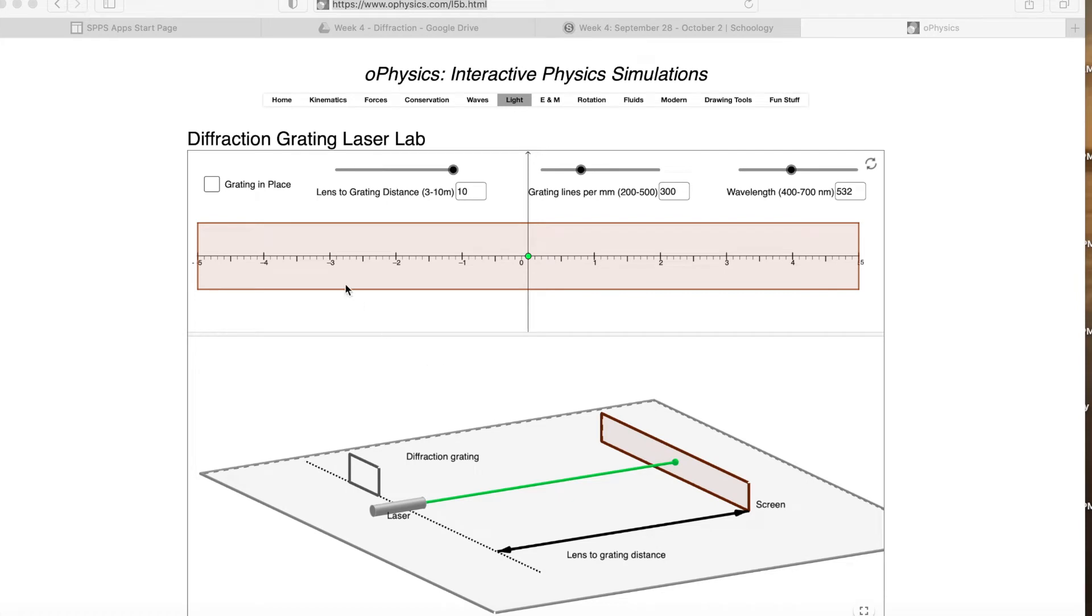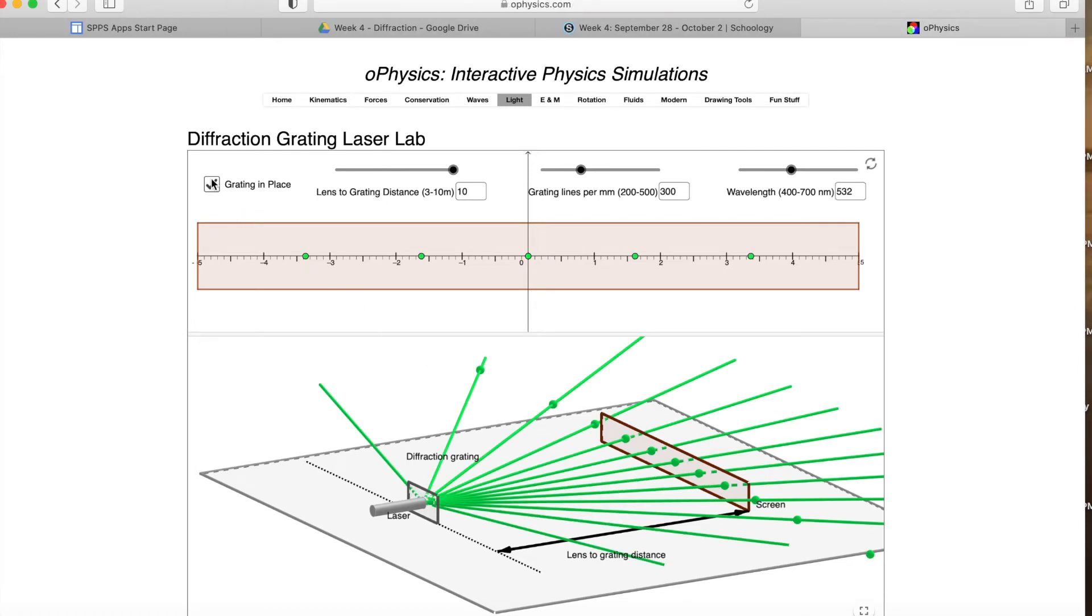Once you get logged in and get the screen up here, you'll need to check to put the diffraction grating in place. You can see that you have one view of the overall setup and then one view of where your maxima are showing up on that meter stick.